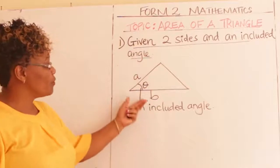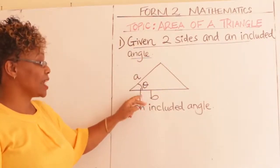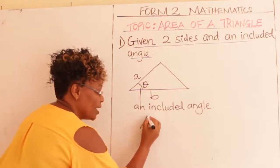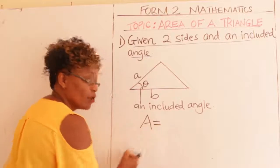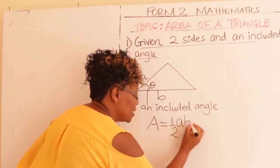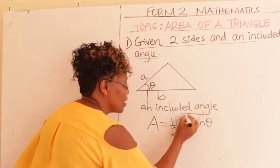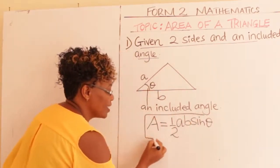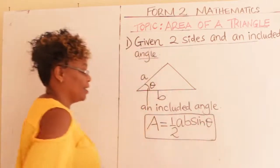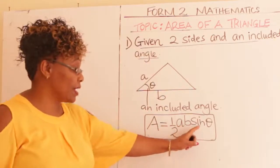So how do you find the area of such a triangle whereby you are given two sides and an included angle? The formula is: area of such a triangle is given by a half times A times B times sine theta. Put this formula in your mind: Area = ½AB sinθ.